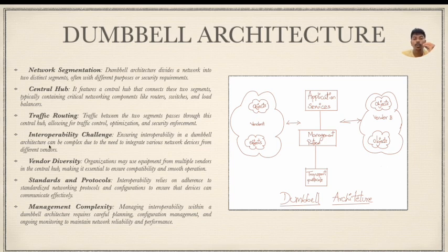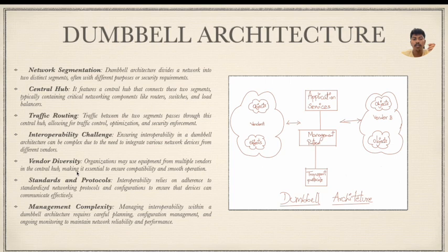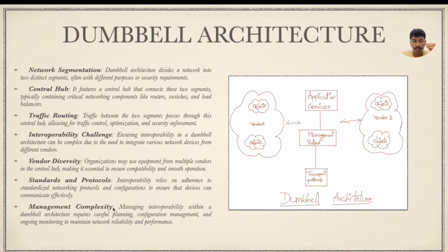Ensuring interoperability in a dumbbell architecture can be complex due to the need to integrate various network devices from different vendors. Organizations may use equipment from multiple vendors in the central hub, making it essential to ensure compatibility and smooth operation. Interoperability relies on adherence to standardized networking protocols and configurations to ensure devices can communicate effectively. Managing interoperability within a dumbbell architecture requires careful planning, configuration management, and ongoing monitoring to maintain network reliability and performance.